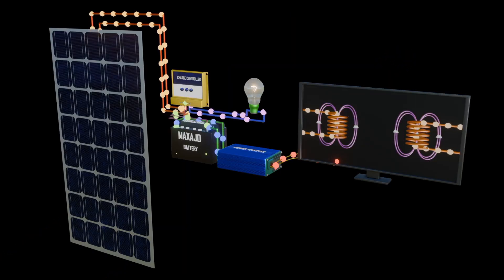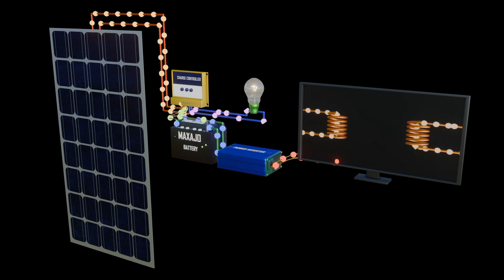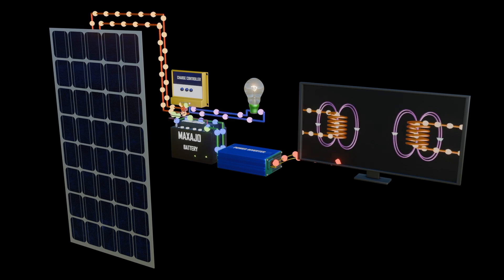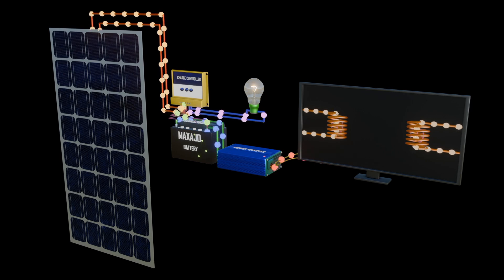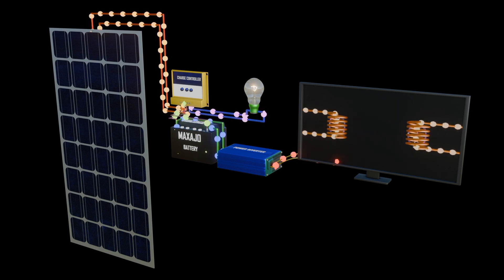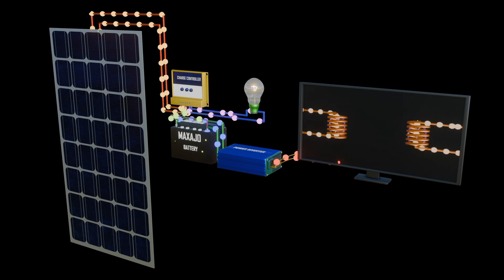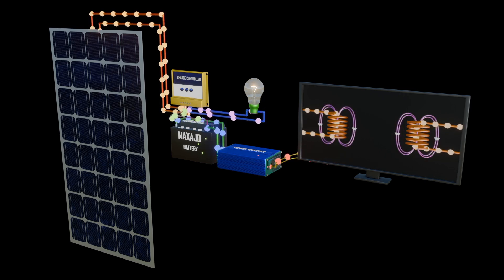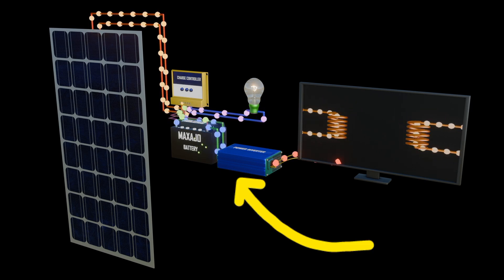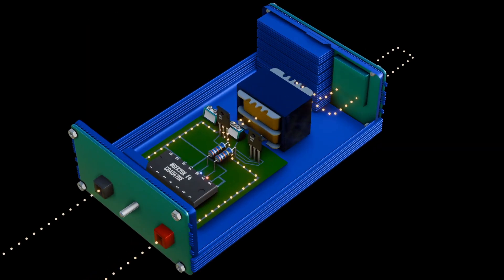In a home which utilizes solar energy from solar panels and has appliances that use AC current to power those devices, it needs to convert the DC current from the solar or battery to AC current for the AC devices. Therefore, the need for inverters as essential components to study is clear. In this video, we want to see how an inverter works.